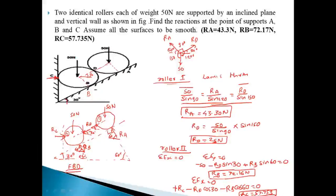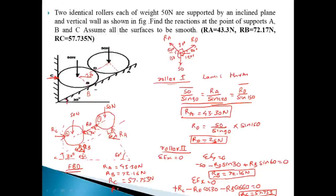So this way we can find out the reactions. To summarize: RA = 43.30 N, RB = 72.16 N, RC = 57.753 N, and RD = 25 N. These are all the contact reactions we needed to find. For more videos like this, you can subscribe to our channel or share this video with your friends.